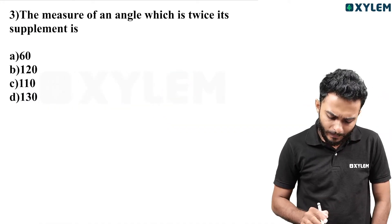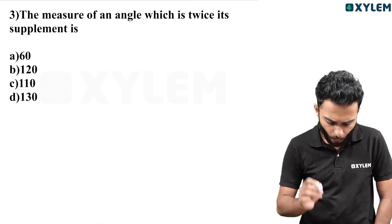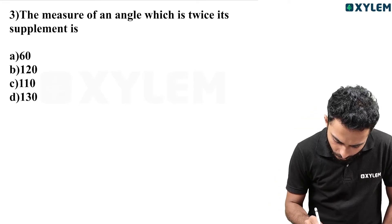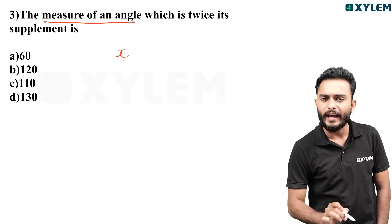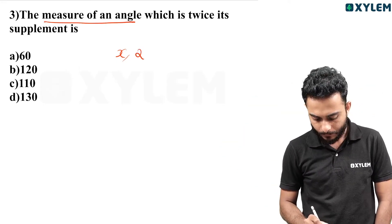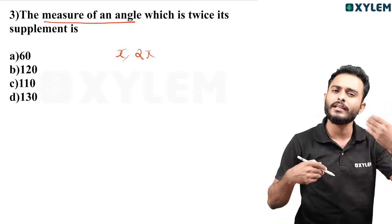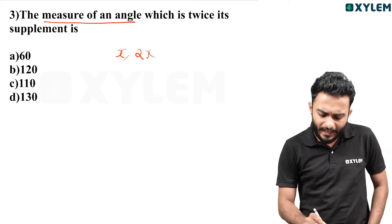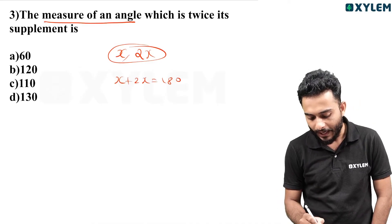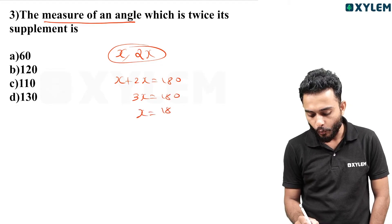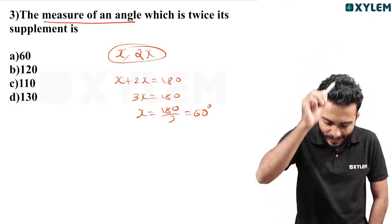The measure of an angle which is twice its supplement. Let the angle be x and its supplement be related. Twice its supplement is 2x. So x plus 2x equals 180, that is 3x equals 180, x equals 180 divided by 3, which is 60 degrees.